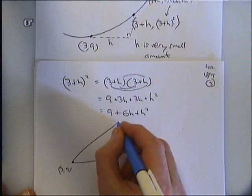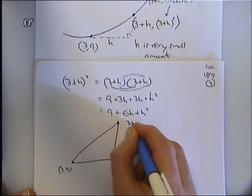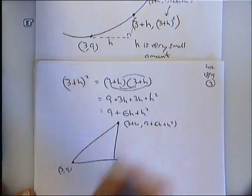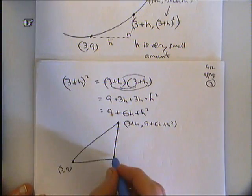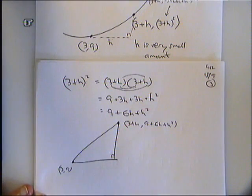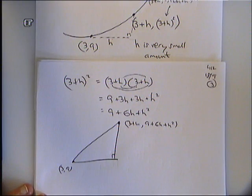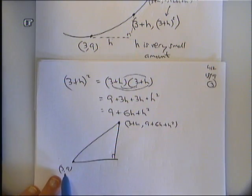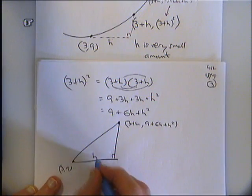So that coordinate is the coordinate 3, 9. The coordinate at the top is 3 plus h, 9 plus 6h, plus h squared. And what I want to do is to work out the gradient of the line, same way as I've worked the other gradients out, by doing the vertical distance divided by the horizontal distance. We've already said the horizontal distance, the distance along from 3 to 3 plus h, is h.